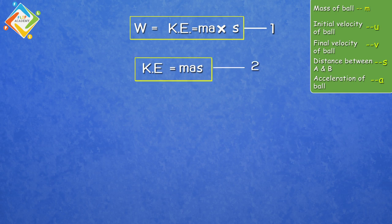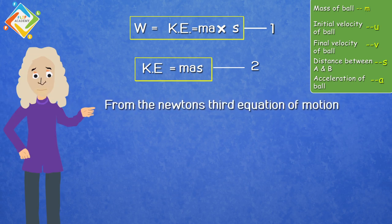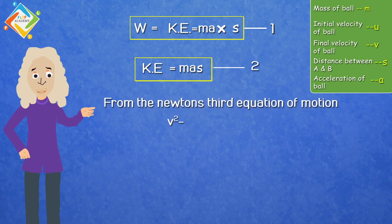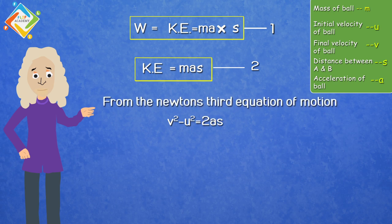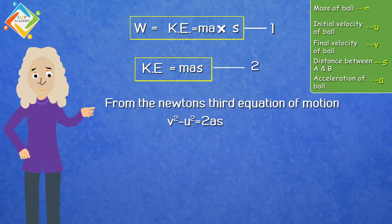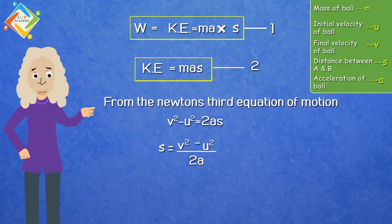Now from Newton's third equation of motion, which was V square minus U square equals 2AS. Now rearranging the equation for the value of S, the equation becomes V square minus U square upon 2A.